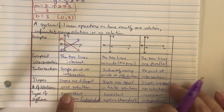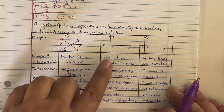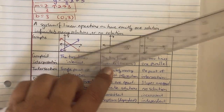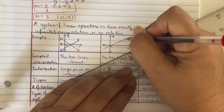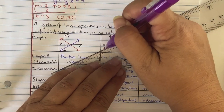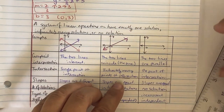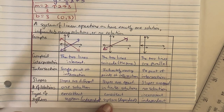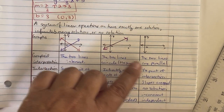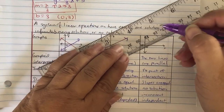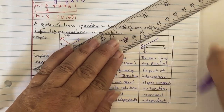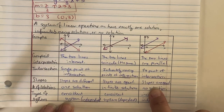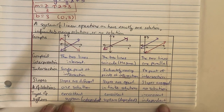If the slopes are different and the lines intersect at a single point, there is one solution — it's called a consistent, independent system. If two lines coincide, meaning the same line sits on top of the other, slopes are equal and there are infinitely many solutions — that's a consistent, dependent system. If two lines are parallel, there is no point of intersection, slopes are equal, no solution — it's called an inconsistent, independent system.